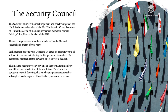The Security Council is the most important and effective organ of the UN — it is the executive wing of the UN. The Security Council consists of 15 members. Five of them are permanent members: Britain, China, France, Russia, and the US. The 10 non-permanent members are elected by the General Assembly for a term of two years.